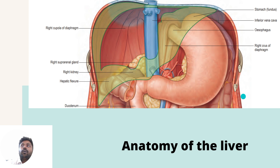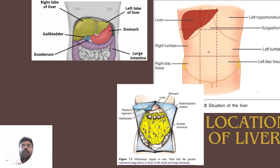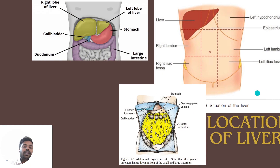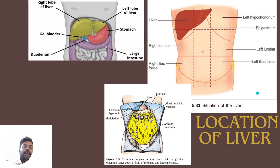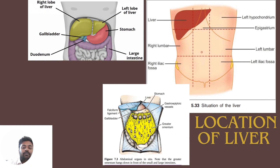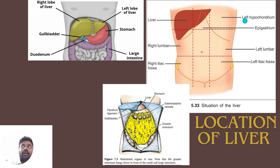Coming to the location of the liver, the liver occupies most of the right hypochondrium, epigastric region and left hypochondrium. And it frequently may extend as far as the anterior axillary line in the left hypochondrium.